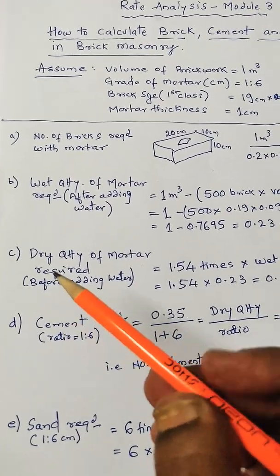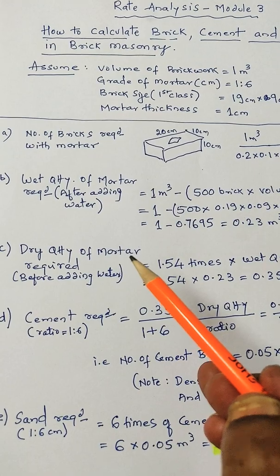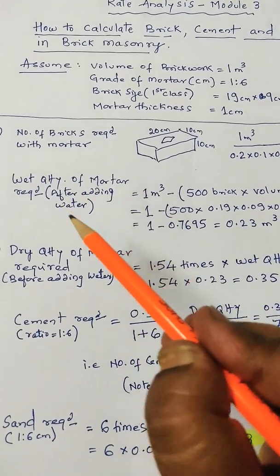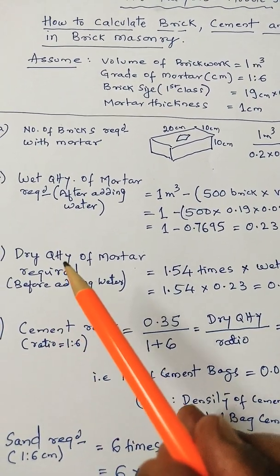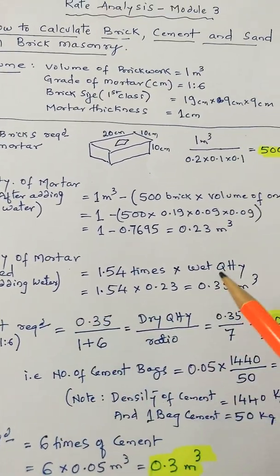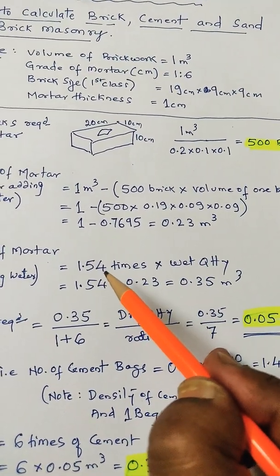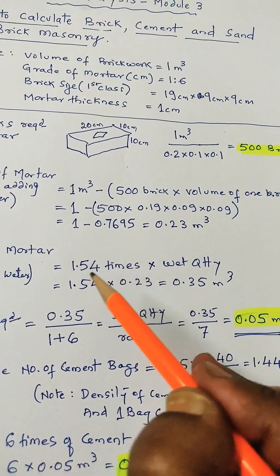Now step 3, that is C. Dry quantity of mortar. We have calculated wet quantity of mortar. Now dry quantity of mortar required, that is before adding water. That is standard. It is a fixed standard. It is calculated in the lab.